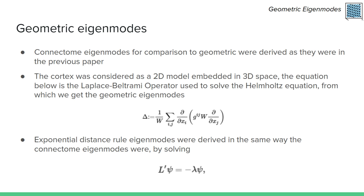For the cortex, understood here as a 2D model embedded in 3D Euclidean space, the general definition of the Laplace-Beltrami operator captures intrinsic geometry, including the curvature of the cortical surface. Using this to solve the Helmholtz equation — the eigenvalue problem for the Laplace-Beltrami operator — we are able to compute the geometric eigenmodes. Another basis set is derived from a simulated connectome constructed via a homogeneous stochastic wiring process, with a probability of connection between vertices decaying exponentially in distance — the exponential distance rule. Because this directly gives the adjacency matrix, solving the eigenvalue problem is done using the graph Laplacian.